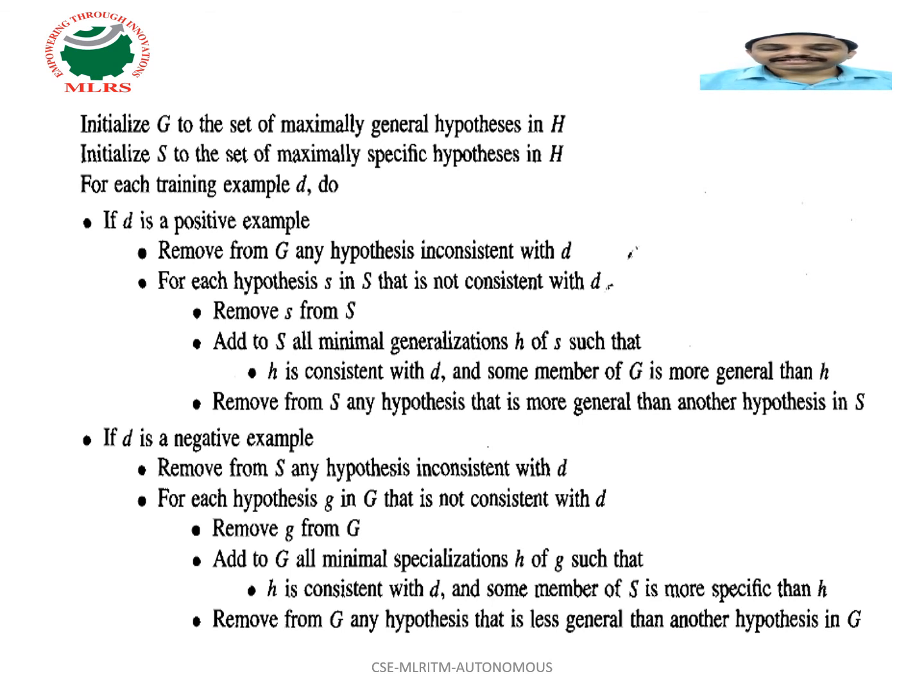For each hypothesis S in S that is not consistent with D, remove S from S. Add to S all minimal generalizations H of S such that H is consistent with D and some member of G is more general than H.